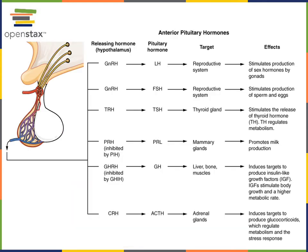In the hypothalamic-pituitary-adrenal axis, or HPA axis, the hypothalamus responds to stress by releasing CRH — the corticotropin-releasing hormone — into the hypophysial portal circuit, the blood flowing into the anterior pituitary. CRH then binds to receptors on the surface of cells in the anterior pituitary and stimulates the production of ACTH, which then travels to the adrenal cortex and binds to receptors on the surface of cells there.